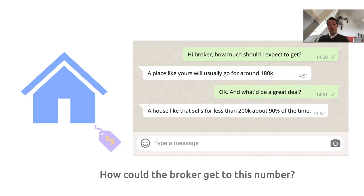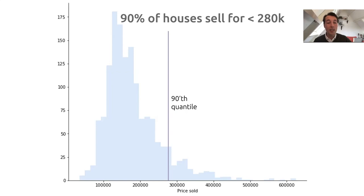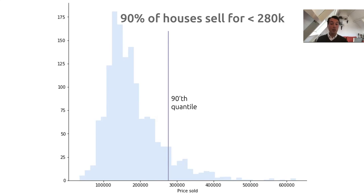Let's say our broker was very mathematical, or that they had some kind of model to back them up. How could they get to such a number? Let's start with the situation where we know absolutely nothing about the house — we don't know how big it is, we don't know what kind of house it is. The best we can do is the naive thing, which is just plotting a histogram and looking at the shape of the distribution. We can say 90% of houses in general sell for less than 280,000. That is a quantile statement — a statement about the 90th quantile, plotted here as a purple line.